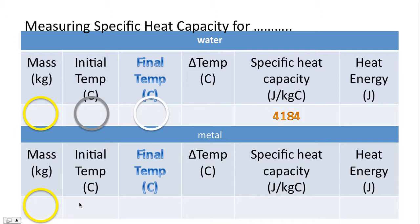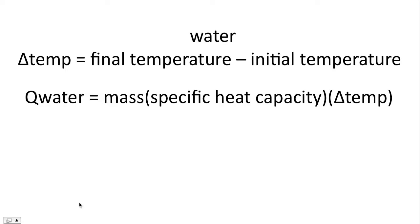From that video, please record in your table the initial temperature and the final temperature. Please also record the initial temperature of the metal, and also the final temperature of the metal, which is the same final temperature as that of the water. To get the temperature change, it's final temperature minus initial temperature. To get the heat energy of the water, it's mass times the specific heat capacity of the water times the temperature change for the water.